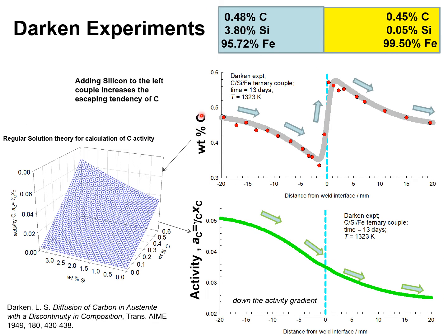Let us examine the Darken experiments in a little bit more detail. The addition of silicon to the left compartment or the left bar increases the escaping tendency of carbon and therefore influences the activity. The activity of carbon in the mixture of carbon, silicon, and iron is a function of both the weight percent silicon and the weight percent carbon. For a given weight percent carbon, the addition of silicon increases the activity of carbon.